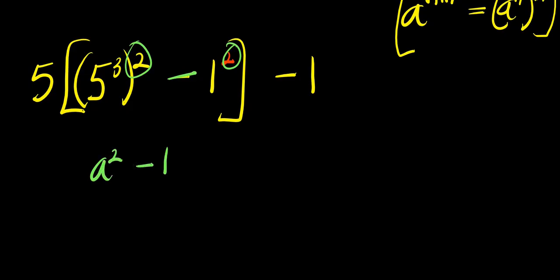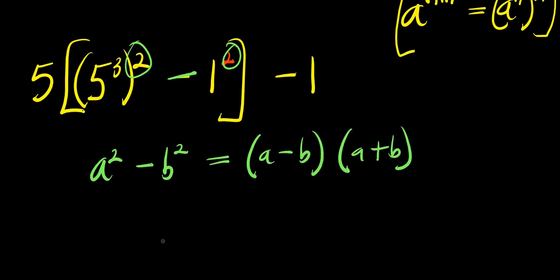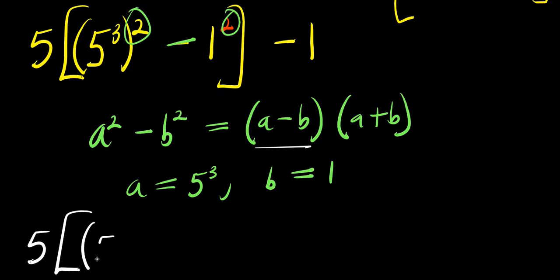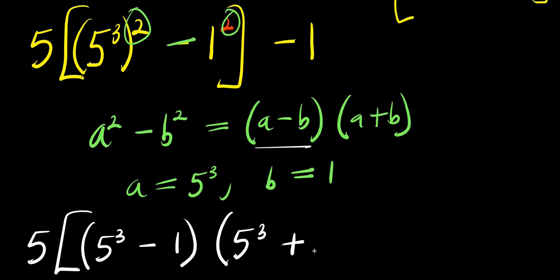If you have a squared minus b squared, this equals a minus b times a plus b. Here a equals 5 power 3, and b equals 1. So at this point we are simply going to have 5 times — a minus b will be 5 power 3 minus 1 — times 5 power 3 plus 1, minus 1.